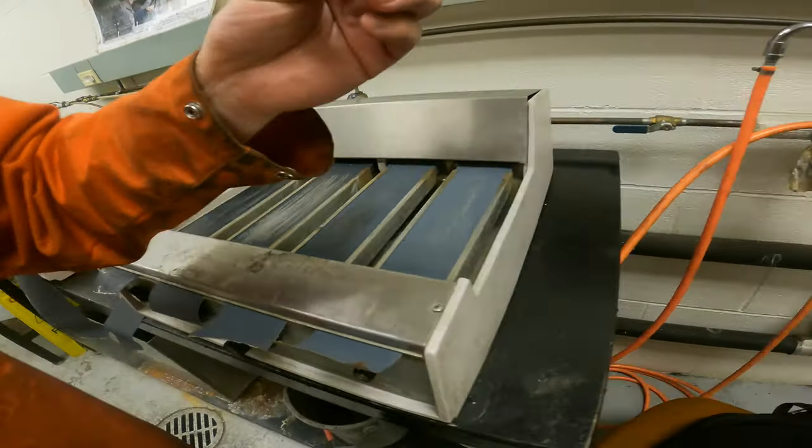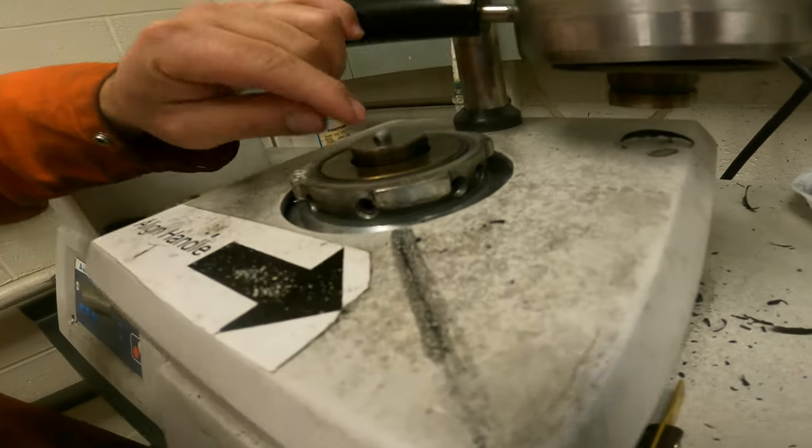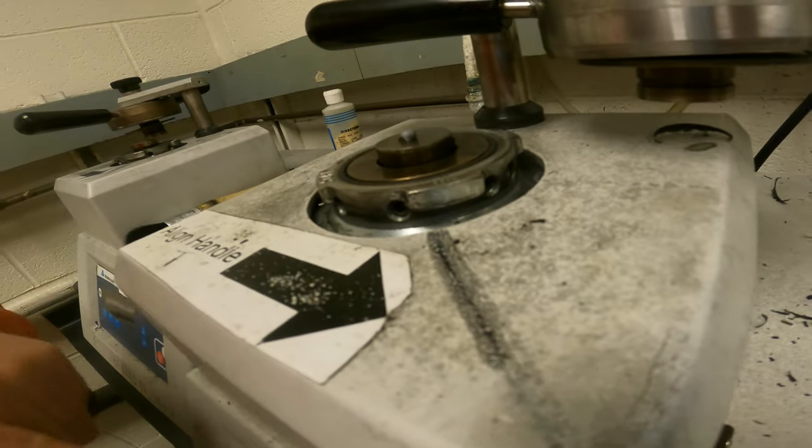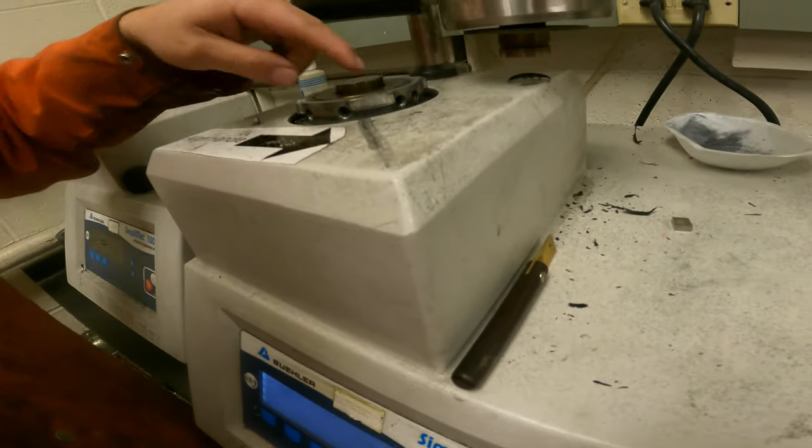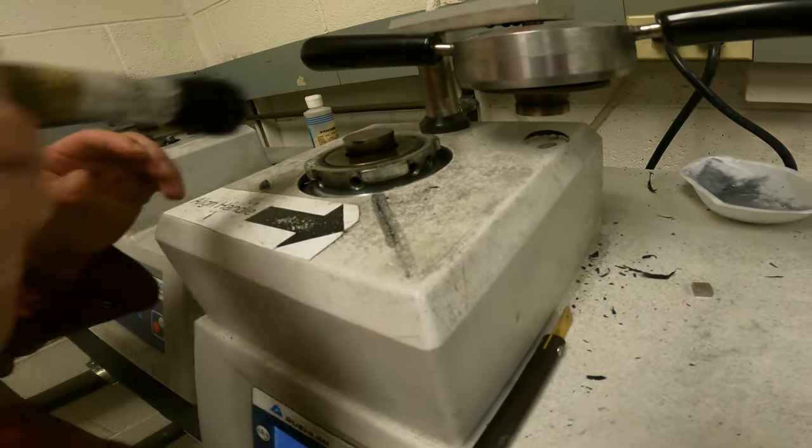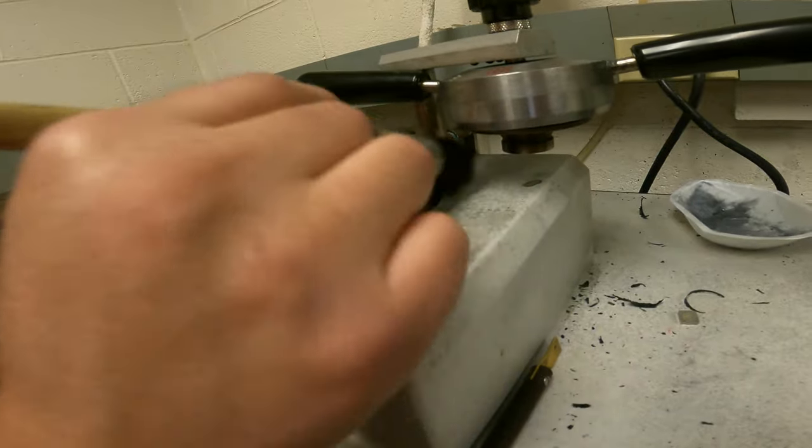After that, we set the sample with the surface that we want to polish down, touching the base, and we start lowering. Now, also important to remember, always make sure the machine is clean. When you're done, you need to clean the machine, but sometimes the machine is dirty, so make sure there aren't any of these plastic particles around.